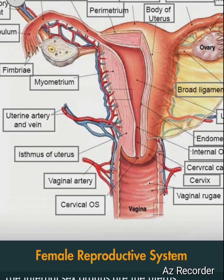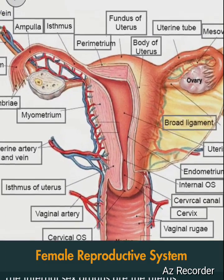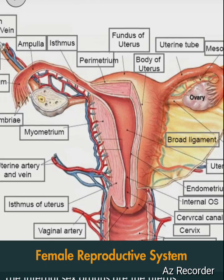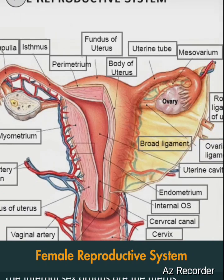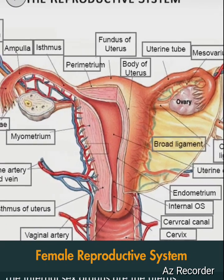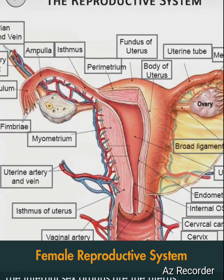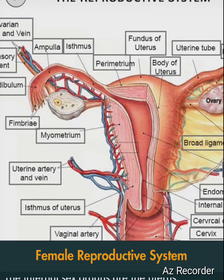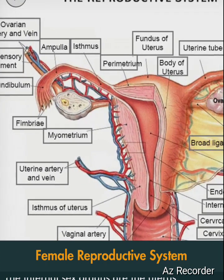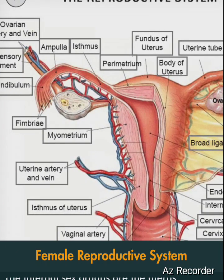The ovaries produce the ova, or egg cells. The external sex organs are also known as the genitals, and these are the organs of the vulva, including the labia, clitoris, and vaginal opening. The vagina is connected to the uterus.